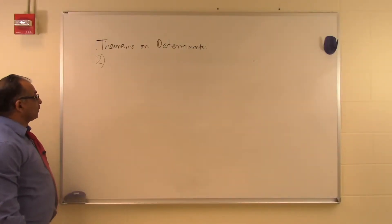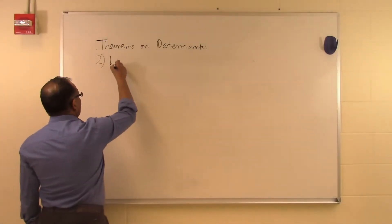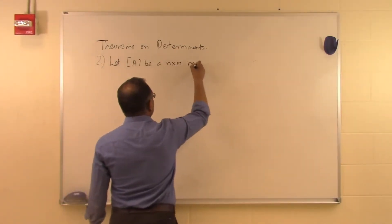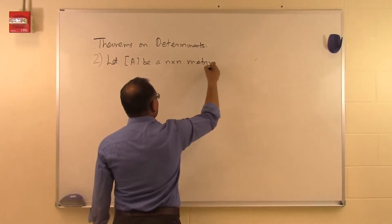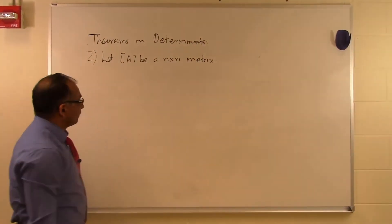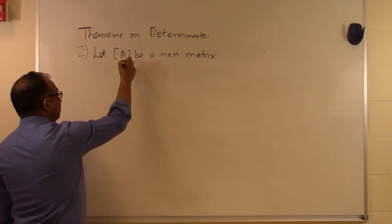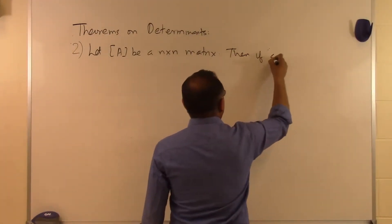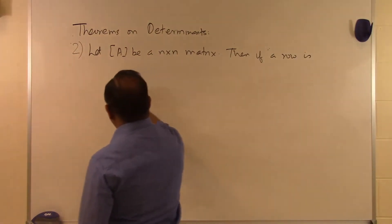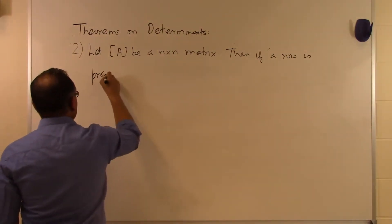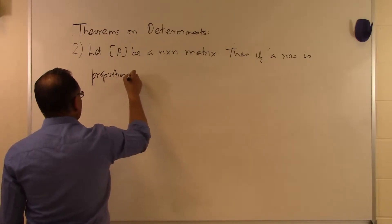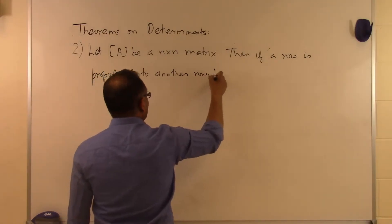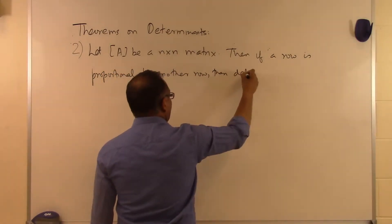In this segment we will talk about some more theorems on determinants. Let A be an n by n matrix. We are talking about square matrices because determinants can only be found for square matrices. If a row is proportional to another row, then the determinant of A is equal to zero.